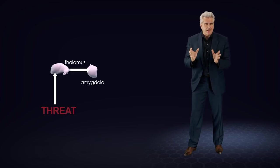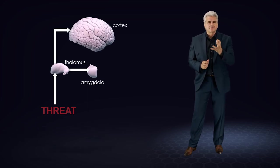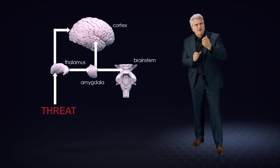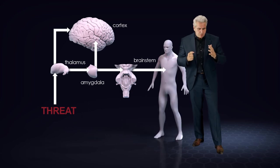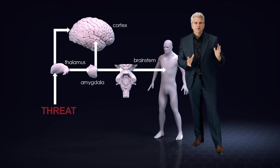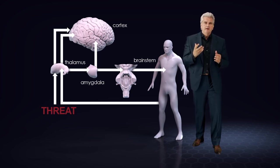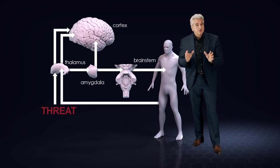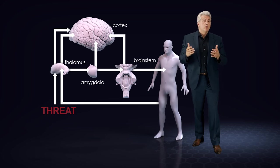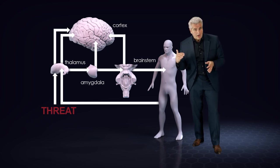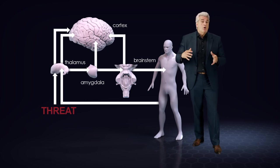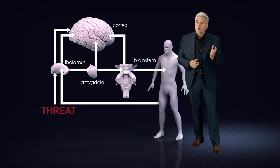Driven by threat detection, the amygdala starts a set of outputs resulting in body activation, heart function, blood pressure, breathing, and secretion of neuromodulators like norepinephrine and hormones such as cortisol.